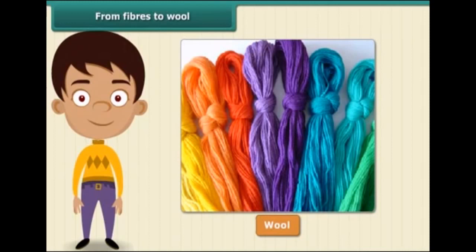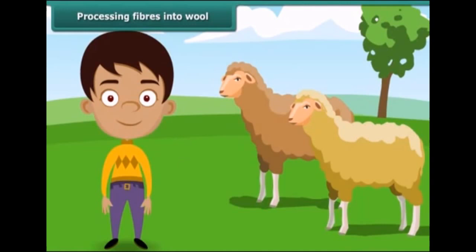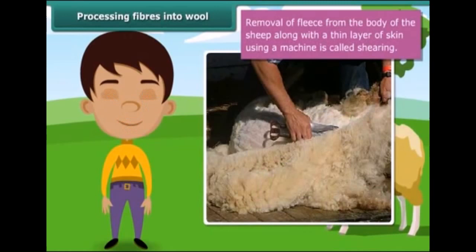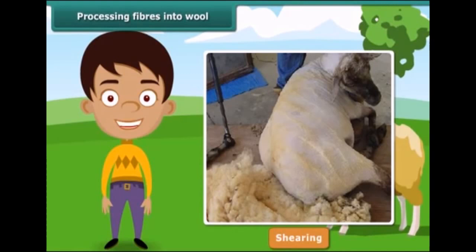The process of obtaining wool from sheep begins with the removal of the fleece from the body of the sheep using a machine. This process is called shearing. Shearing does not hurt the sheep because the uppermost layer of the sheep's skin is dead. Usually, hair is removed during hot weather, which enables the sheep to survive without their protective coat.